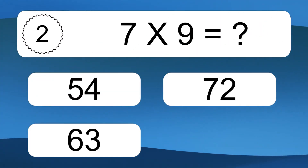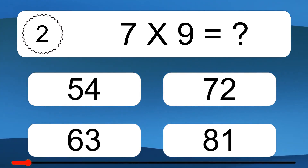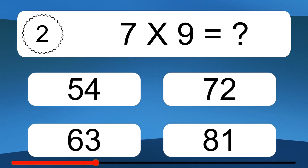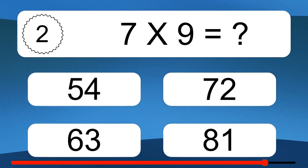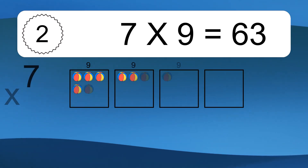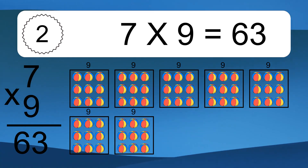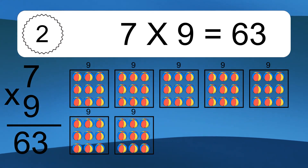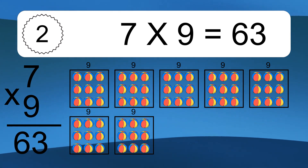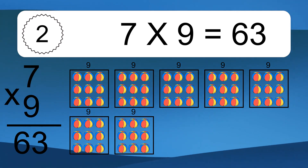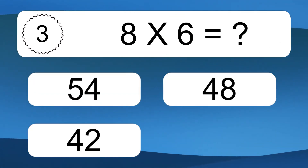7 times 9 equals what? 7 times 9 equals 63. We have 7 boxes, and each box has 9 colorful balls inside. If you count all the balls in all the boxes together, you will have 7 times 9 balls. This equals 63 balls.